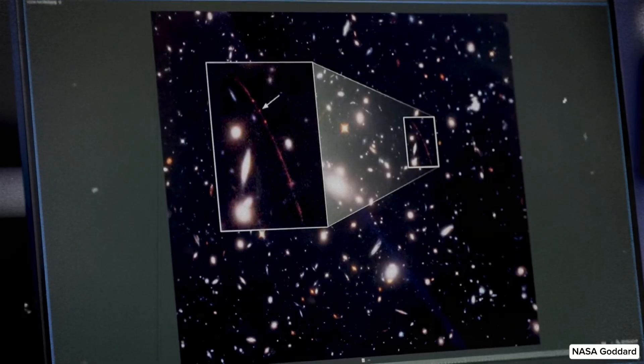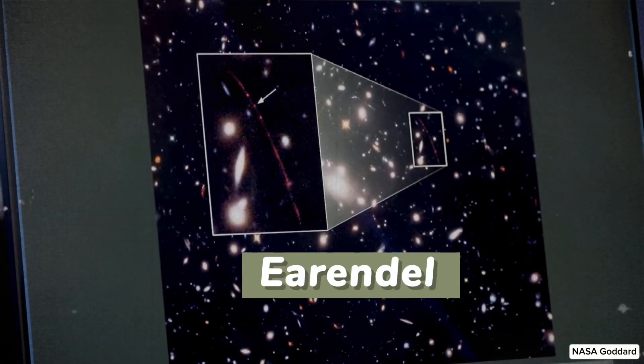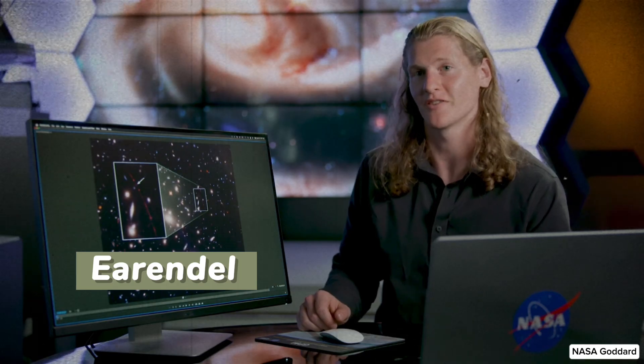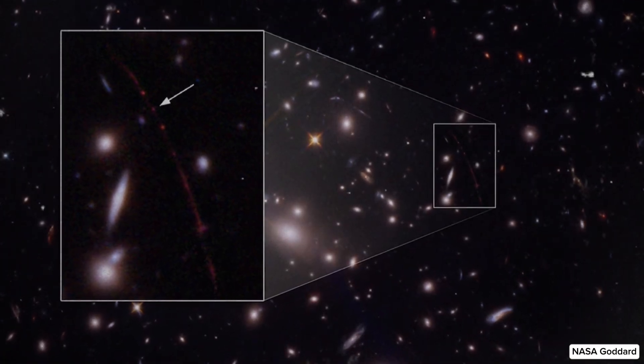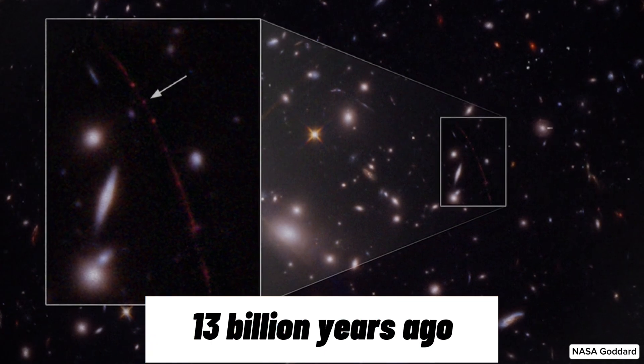And then what's highlighted by that white arrow is the lens star Earendel, which is the most distant star that's been observed so far. So we're seeing this entire galaxy as it was about 13 billion years ago.